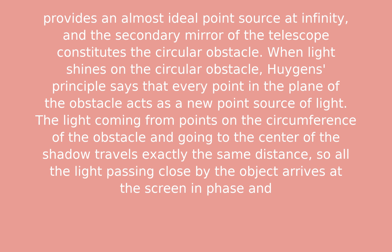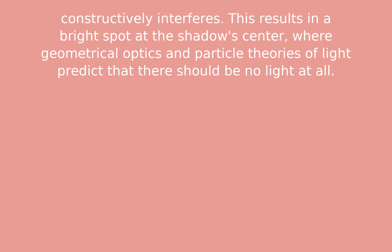When light shines on the circular obstacle, Huygens' principle says that every point in the plane of the obstacle acts as a new point source of light. The light coming from points on the circumference of the obstacle and going to the center of the shadow travels exactly the same distance, so all the light passing close by the object arrives at the screen and constructively interferes. This results in a bright spot at the shadow center, where geometrical optics and particle theories of light predict that there should be no light at all.